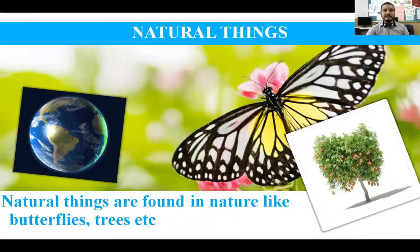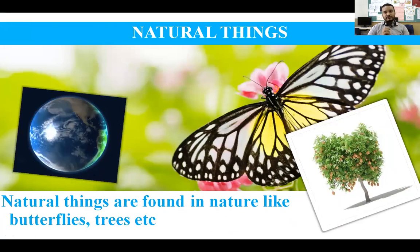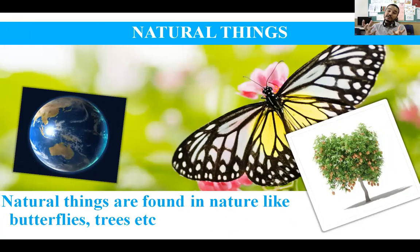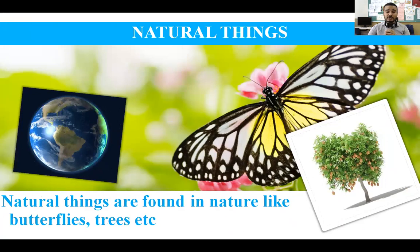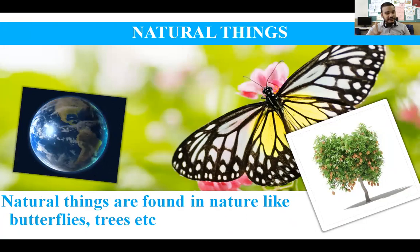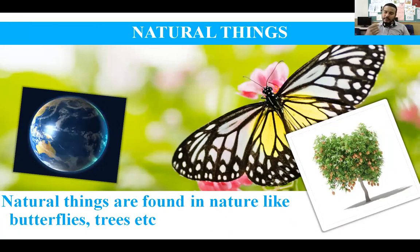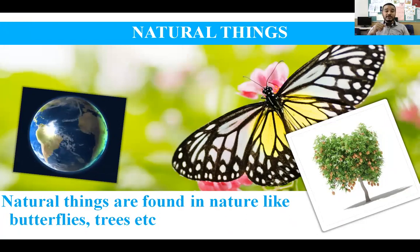First, here is about natural things. You can see one butterfly, one mango tree, and lots of mangoes. Natural things are the things which are found in nature. Can we prepare mangoes in our kitchen? No, we cannot prepare mangoes in our kitchen because it is a natural thing.